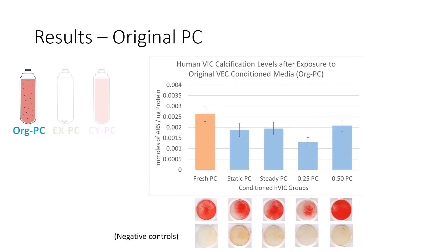In our first study with the original procalcific VEC conditioned media, we see a decreased calcification in the 0.25 OSI group. On the left side, we have a fresh PC positive control, where VICs were conditioned in fresh procalcific media with no exposure to any VEC communication. The negative controls are VICs conditioned with VEC media with no procalcific ingredients. While the flow groups are not statistically significant to each other, there is a statistical significance between the fresh PC control and the 0.25 OSI group.